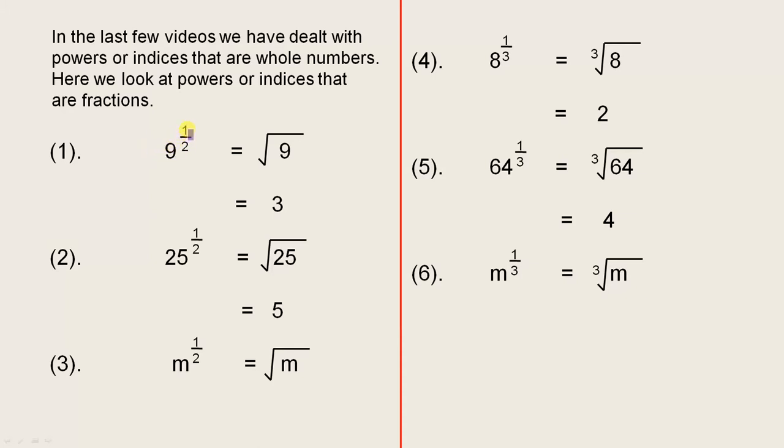Nine to the power of one half. When you have a fraction here, if you have a 1 for the numerator and a 2 for the denominator, that means the square root. So whenever the fraction is a half, that means the square root of the number in question, the square root of the base. The square root of 9 is 3.